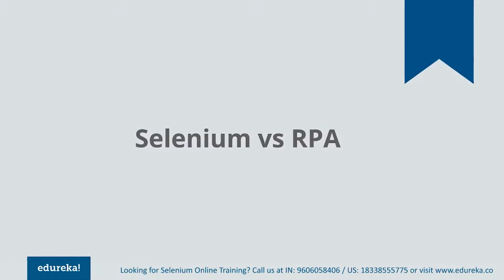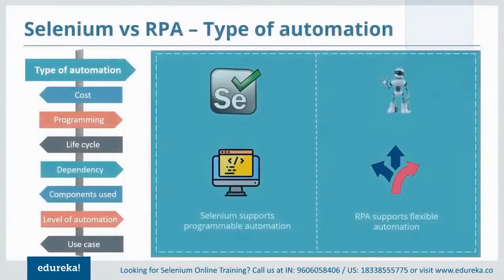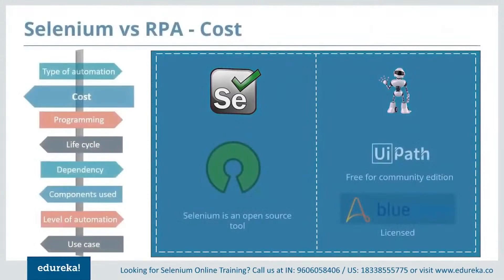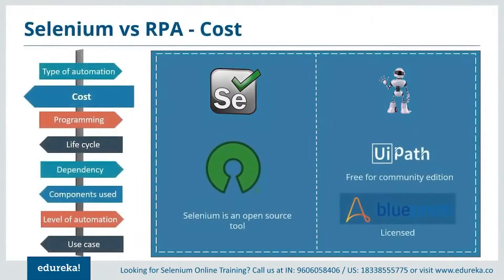Let's get started by comparing the type of automation. Selenium supports programmable automation, whereas RPA supports flexible automation. Programmable automation can be used to change the sequence of any operation based on user requirements, whereas flexible automation is a hybrid of fixed and programmable automation.